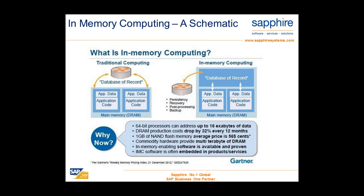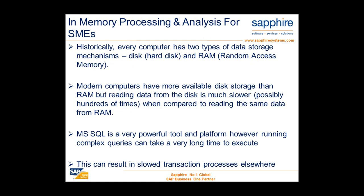Why is it a good thing to be doing? Well, production costs can drop. Flash memory is widely available. Modern computers are advancing all the time and often have much more available disk storage. But reading the data from the disk is an awful lot slower when you compare to reading the same data from RAM.